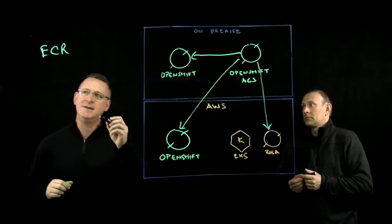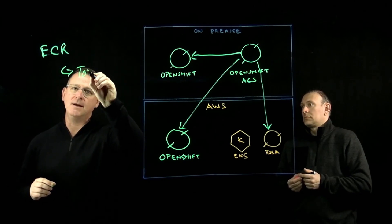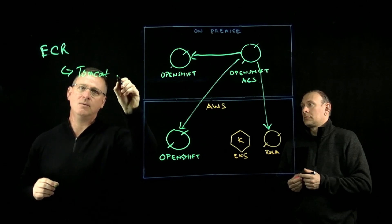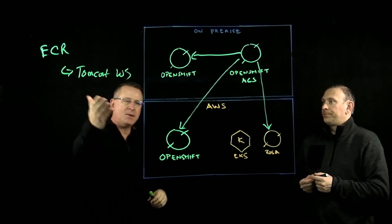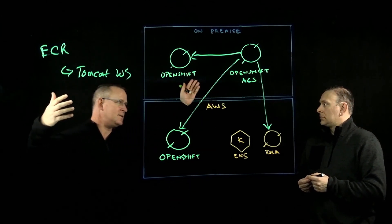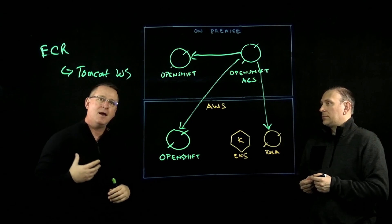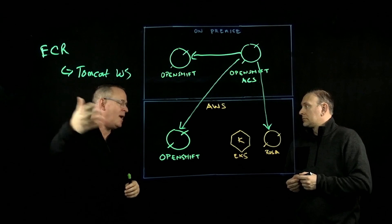For example, when you think about your containers, you may have a container that has some type of, maybe it's a Tomcat web server that's deployed inside of that container. Maybe it's an old version. Maybe it's version 9.x. Or, you know, the most recent one is, I don't know what, 11.x. But what if there's a known vulnerability with that version of Tomcat?